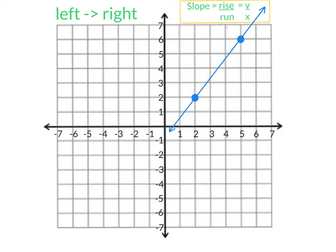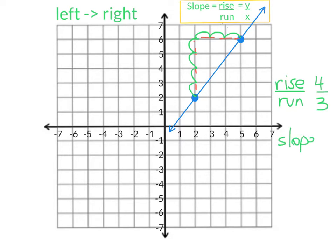Here's our first example. We can see this left and right that I've written here, and that has to do with the left point versus the right point. We're going to be counting from the left to the right. We're going to trace an imaginary pathway, and from the left point we're going to count up one, two, three, four. So the rise was four, and from here we're going to run one, two, three. So our slope is four-thirds.